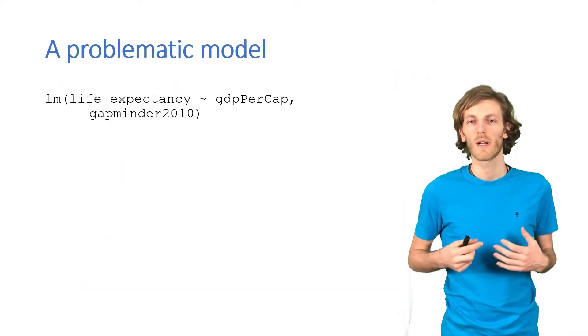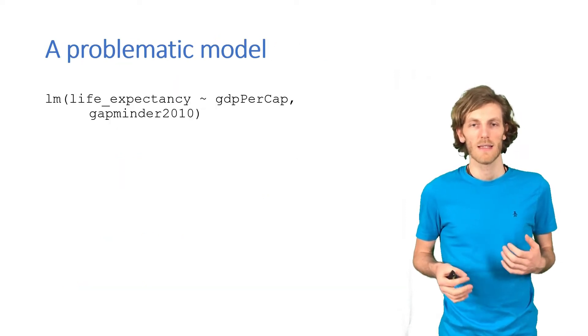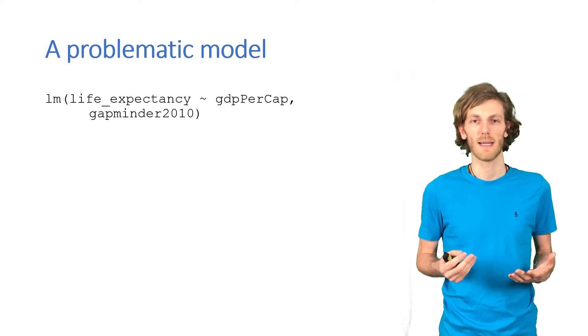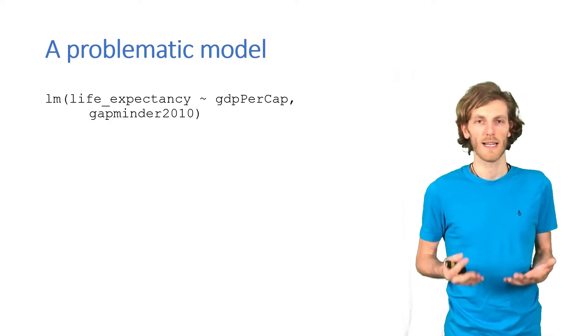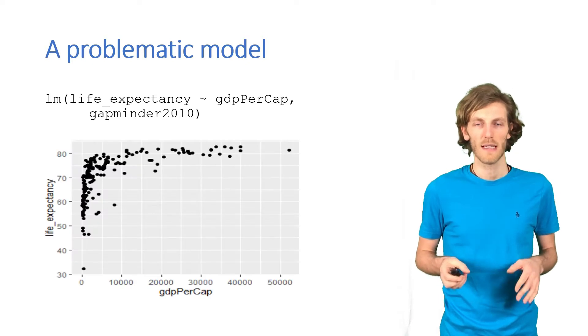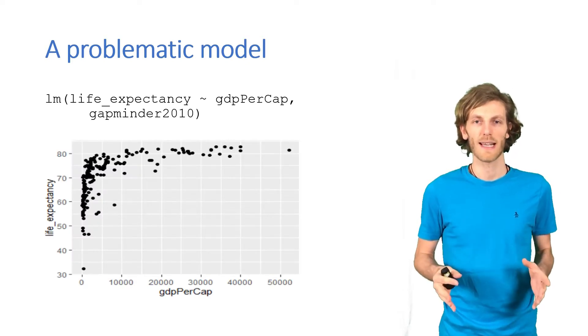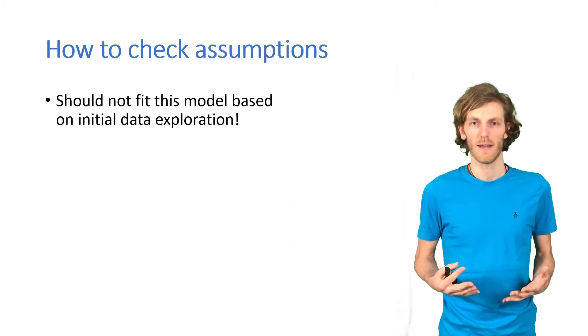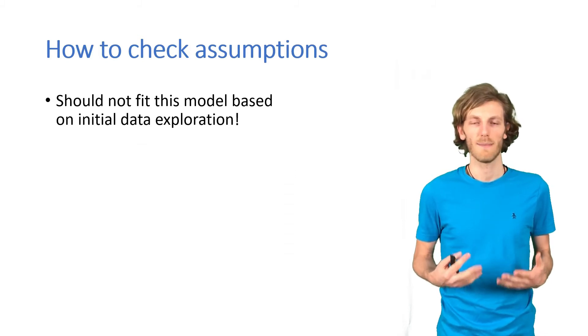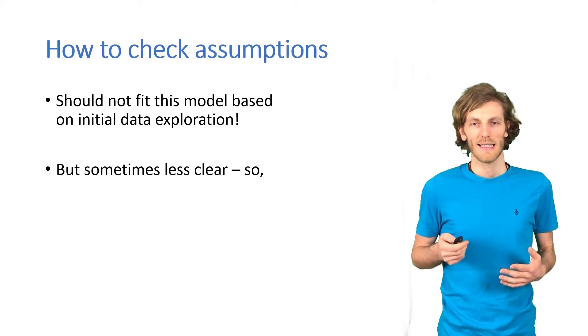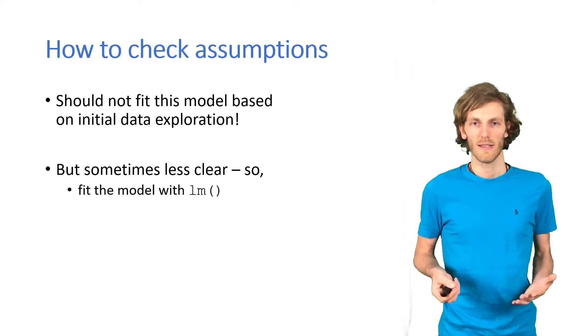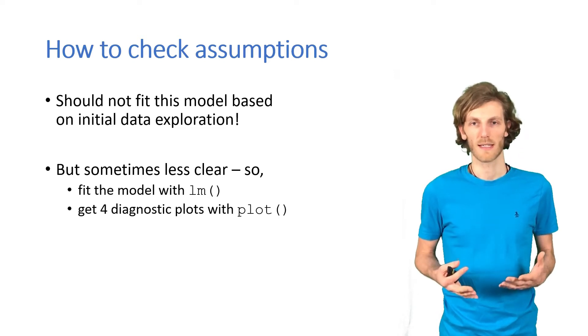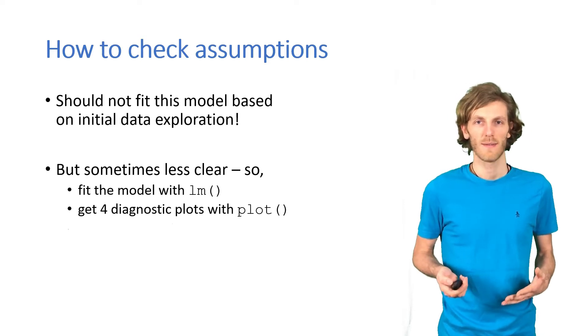So, let's go through an example of a model that is clearly problematic. Let's say we are interested in the link between per capita income and life expectancy. We just naively run a linear regression model. We clearly shouldn't do it, because if we look at the scatter plot, we see that fitting a straight line here is not a good idea. But, if we fit a model, how can we assess whether it meets the assumptions? For that, we need to use the lm function, save the result into a variable, then use the plot function to get four diagnostic plots, and then check them for issues.